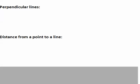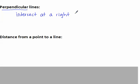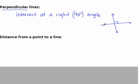Let's review what perpendicular lines means. Perpendicular lines are lines that intersect at a right angle, or a 90-degree angle. Here is a pair of perpendicular lines.